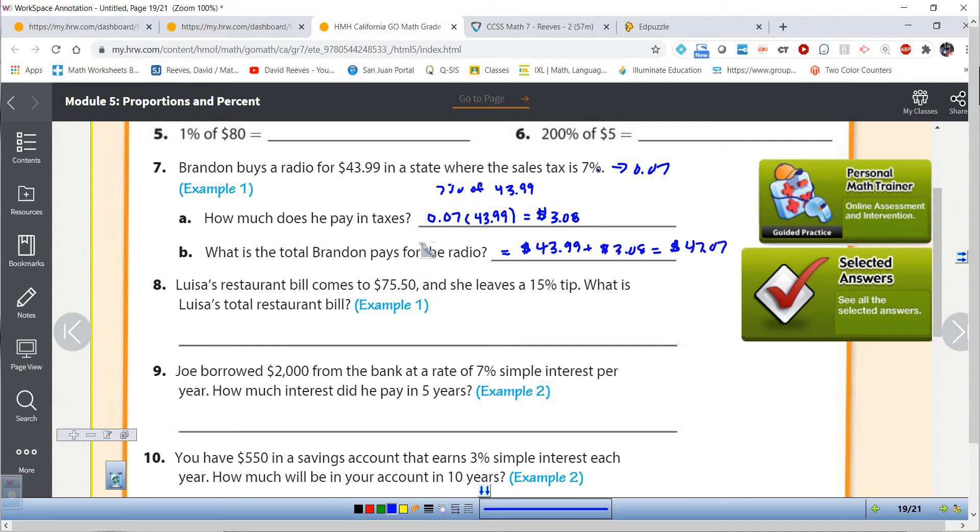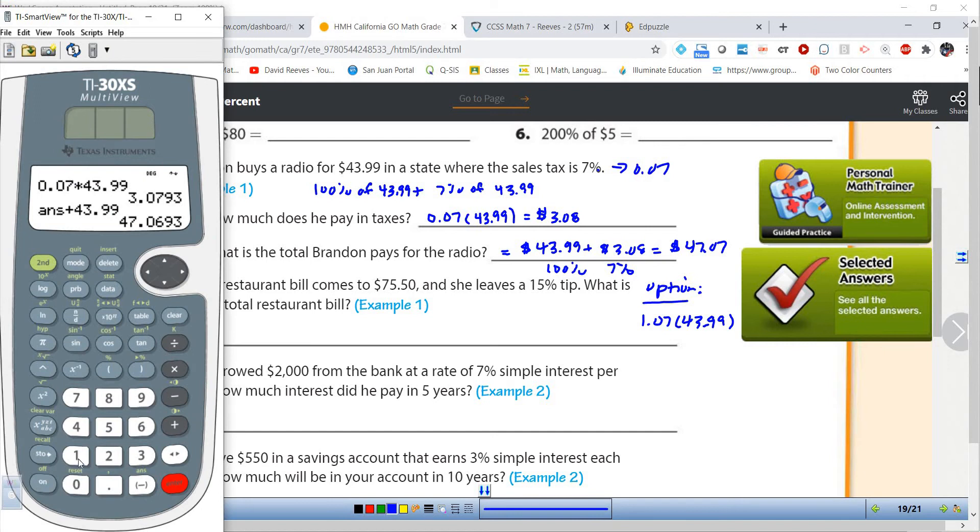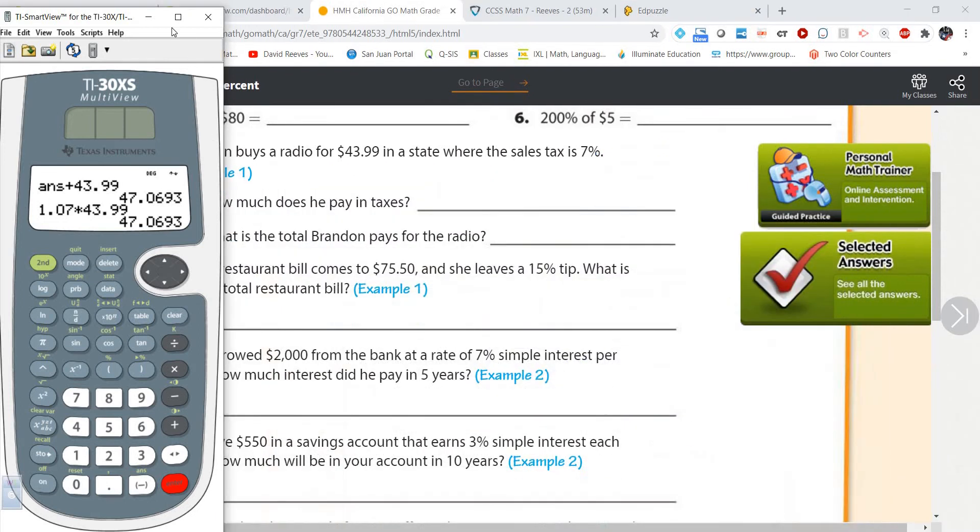And really, we should have done that with mental math, right? Because if we just put a penny on here, that would be $44, and that would be $3.07. I would not be a good teacher if I did not remind you what we really did was we did 100% of 43.99 and we added 7% of 43.99. We could have done 1.07 times 43.99, and you see that we get that same exact answer. Because 100% plus 7% is 107%.